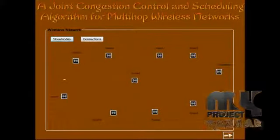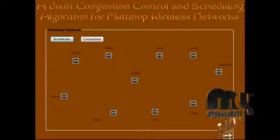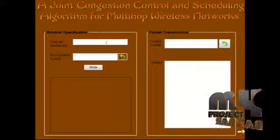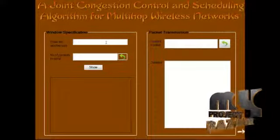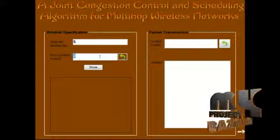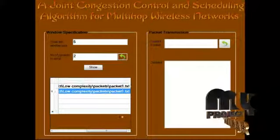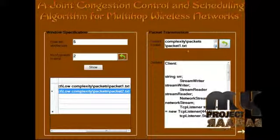Clicking the next button shows the nodes in the network. We are using 10 nodes, and the source and destination nodes are shown. Then we click next to specify the window size. The window-based flow control is applied here. Since we have 2 packets to transmit, the window size must be greater than 2. We set the window size to 5. Clicking the show button displays the window and the corresponding packets — packet 1 and packet 2 are in the queue. Packet 1 is first in the queue. Clicking current packet shows the first packet to transmit.